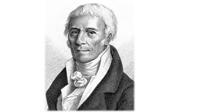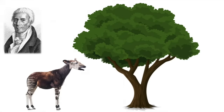So what did Jean-Baptiste Lamarck theorise? His theory of evolution was this. This here is the okapi. Even though it looks like a zebra, it's actually the closest living relative of the giraffe. And the giraffe and the okapi are both in the family Giraffidae.